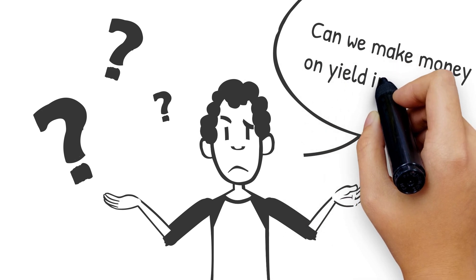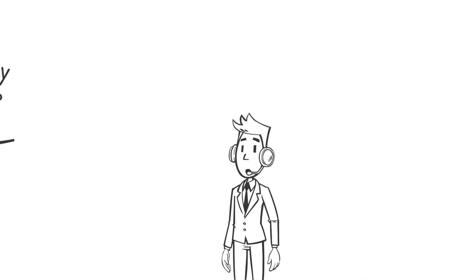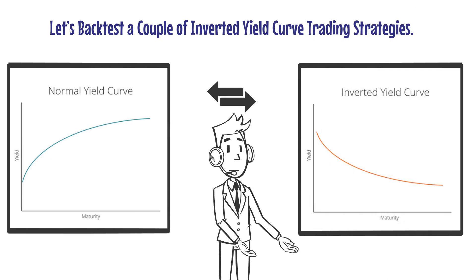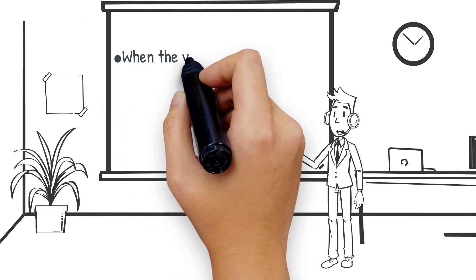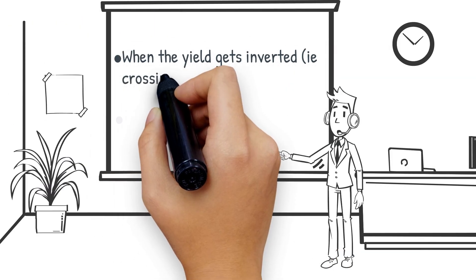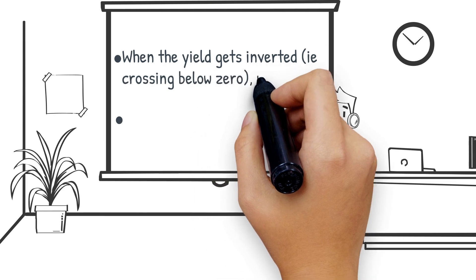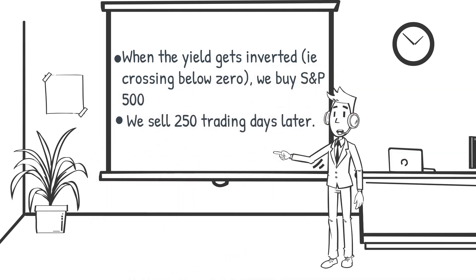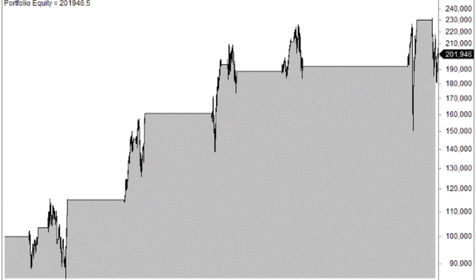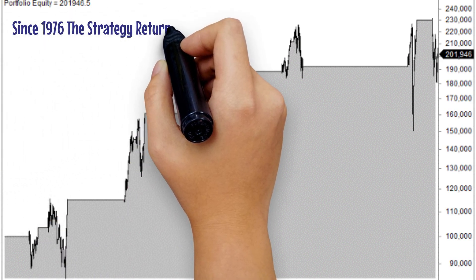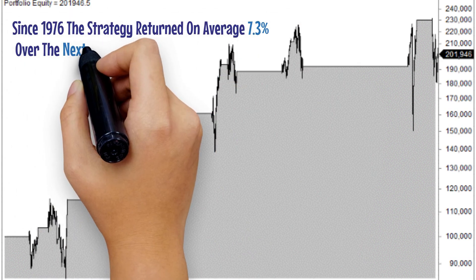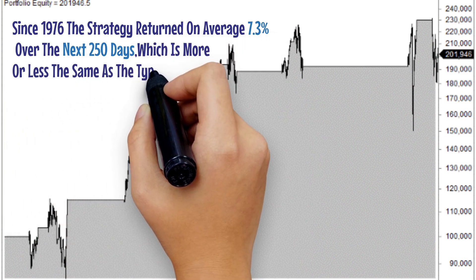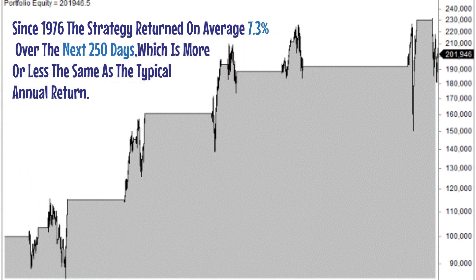Can we make money on yield inversions? Let's backtest a couple of inverted yield curve trading strategies. Our first strategy buys when the curve gets inverted and sells 250 trading days later. Since 1976, the strategy returned an average of 7.3% over the next 250 days, which is more or less the same as the typical annual return.